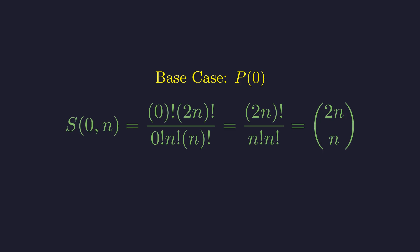When m equals 0, something really nice happens. Since 0 factorial is 1, our expression simplifies to 2n choose n, which is just the central binomial coefficient. And of course, binomial coefficients are always integers.